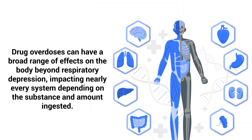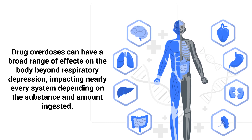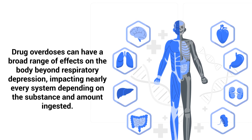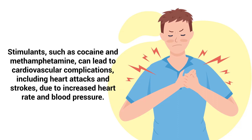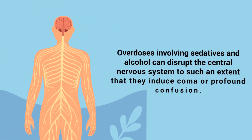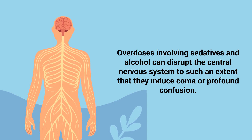Drug overdoses can have a broad range of effects on the body beyond respiratory depression, impacting nearly every system depending on the substance and amount ingested. Stimulants, such as cocaine and methamphetamine, can lead to cardiovascular complications, including heart attacks and strokes, due to increased heart rate and blood pressure. Overdoses involving sedatives and alcohol can disrupt the central nervous system to such an extent that they can induce coma or profound confusion.